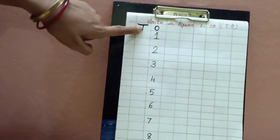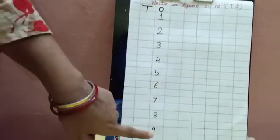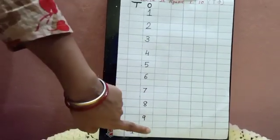then under 10's you will write 1 and under 1's you will write 0. That means 1, 0, 10.